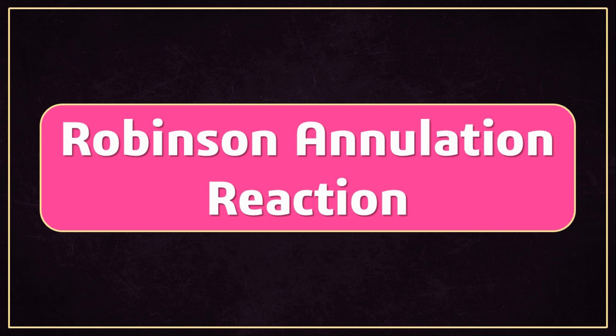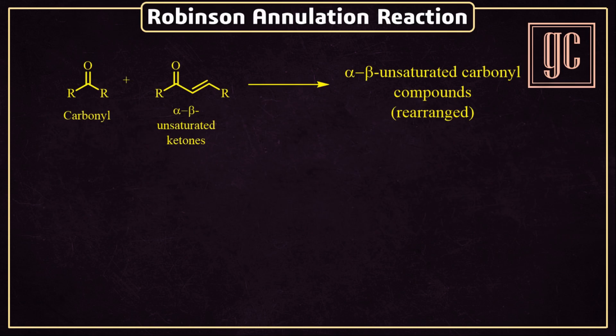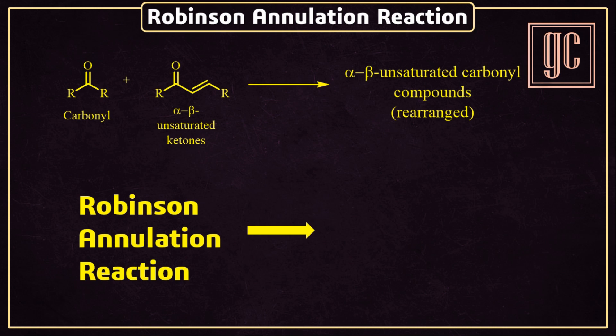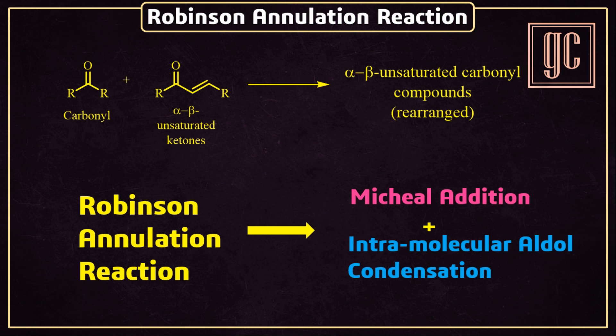In this video we are going to discuss Robinson annulation reaction. This is a condensation reaction in which an alpha-beta unsaturated carbonyl compound undergoes aldol condensation with other saturated carbonyl compounds. The final product of the reaction is a coupled alpha-beta unsaturated carbonyl. Robinson annulation reaction is completed in two steps: first is Michael addition, second is intramolecular aldol condensation.